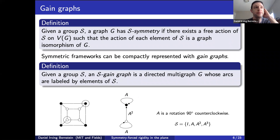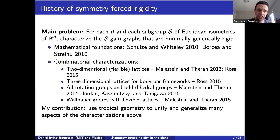Given this setup, you can ask: for each dimension d and each subgroup S of Euclidean isometries of R^d, characterize the S-gain graphs that are minimally generically rigid. By generic, I mean: if you fix the position of one representative in each vertex orbit, then applying symmetry gives positions for everything. So you can ask about generic rigidity even in the presence of symmetry.